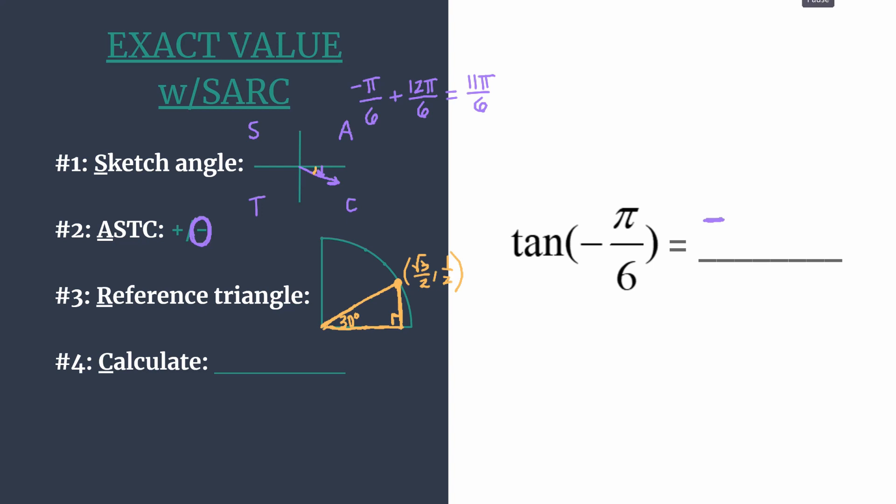Now we'll use these coordinates to calculate the tangent in step 4. The unit circle ratio for tangent is the y-coordinate divided by the x-coordinate. We have those coordinates from step 3, so we need 1/2 divided by √3 over 2.